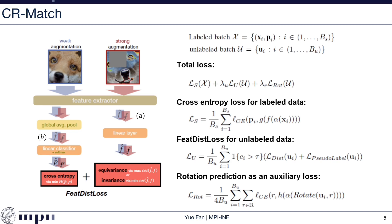Next, I'll talk about the details of how our method processes one batch. Given a batch of labeled and unlabeled data, the total loss consists of three terms. The first is the standard cross-entropy loss for labeled data, where pi is the class label for image xi, alpha is the weak augmentation, f denotes the feature encoder, and g is the linear classifier. For unlabeled data, we have two losses. The first is our Fisher distance loss: for any unlabeled image ui, we compute the loss based on the pseudo-label, then compute the distance between weak and strong features using cosine distance.